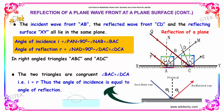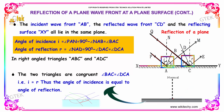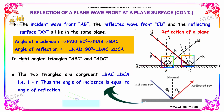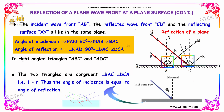The angle of incidence I is the angle PAN, which equals 90 degrees minus angle NAB, which is nothing but angle BAC. This angle BAC is the angle of incidence, indicated by the term I.